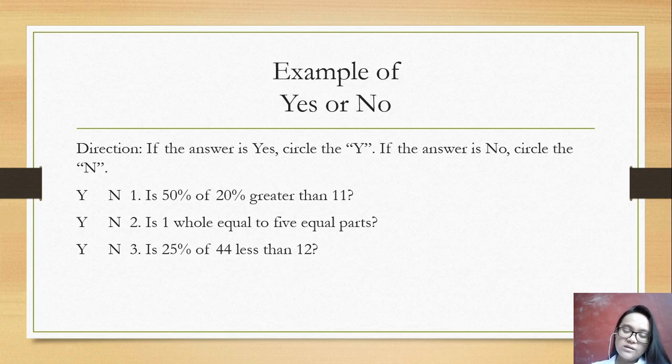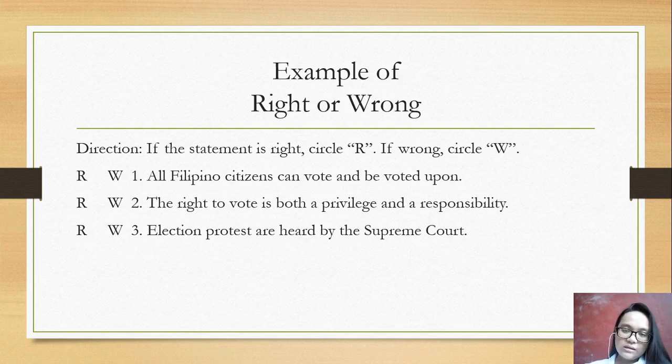Right or wrong: circle the R if right, circle W if wrong. One: all Filipino citizens can vote and be voted upon. Two: the right to vote is a privilege and responsibility. And three: election protests are heard by the Supreme Court. So if your answer is right, just circle R. If your answer is wrong, circle W.